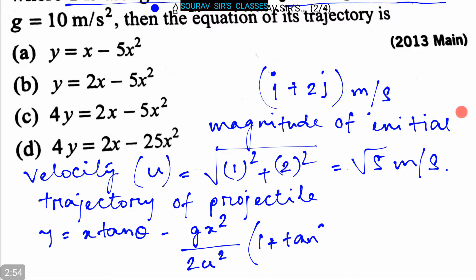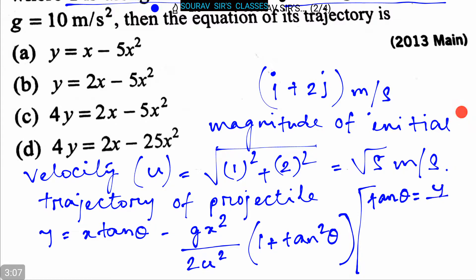The equation of trajectory of the projectile is y = x·tan θ minus gx² divided by 2u²·(1 + tan²θ). Here, tan θ equals the y-component by the x-component, that is 2 by 1, which equals 2.